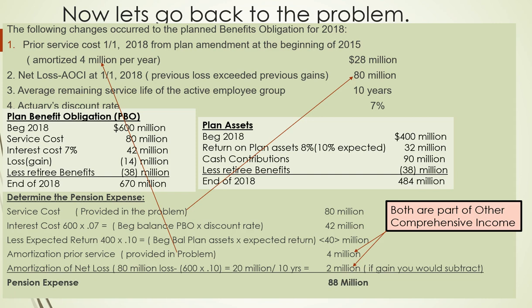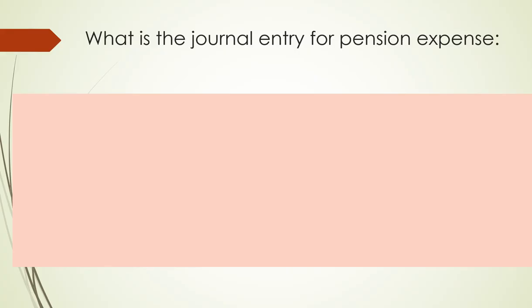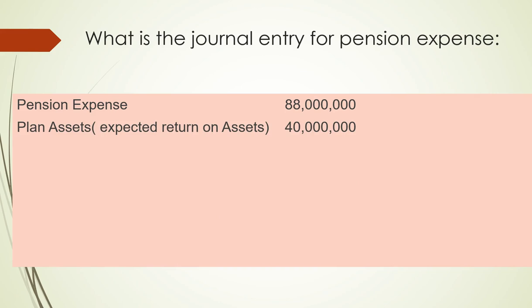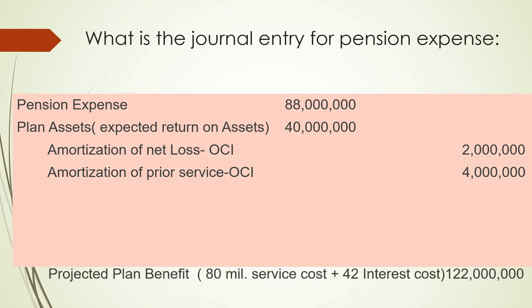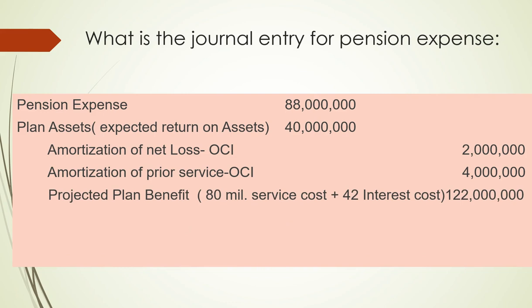For the pension expense journal entry: debit pension expense 88 million; credit plan assets (expected return on assets) 40 million; credit amortization of net loss — other comprehensive income; credit amortization of prior service — other comprehensive income; and credit PBO for 122 million (80 million service cost plus 42 million interest cost).